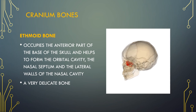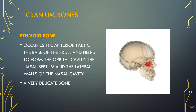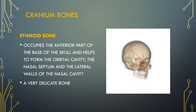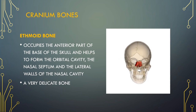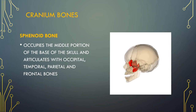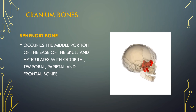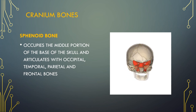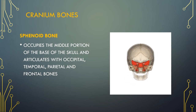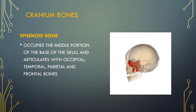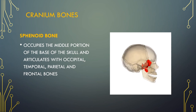The ethmoid bone is an unpaired bone in the skull that separates the nasal cavity from the brain. It is located at the roof of the nose between the two orbits and is one of the bones that make up the orbit of the eye. It is a very delicate bone. The sphenoid bone is a compound bone which forms the base of the cranium behind the eye and below the front part of the brain. It has two parts of broad lateral wings and a number of other projections and contains two air-filled sinuses. It articulates with the occipital, temporal, parietal and frontal bones.